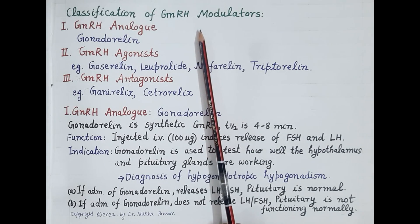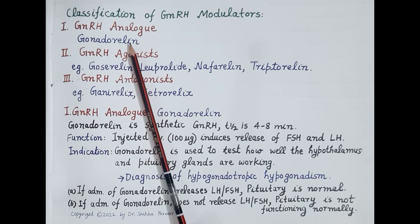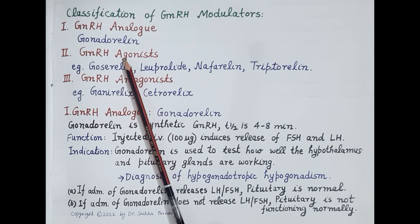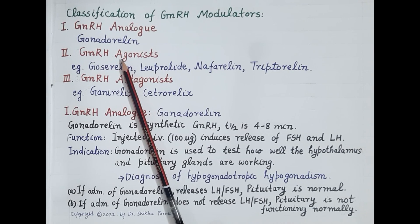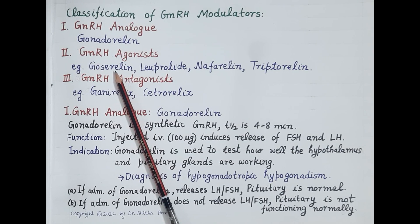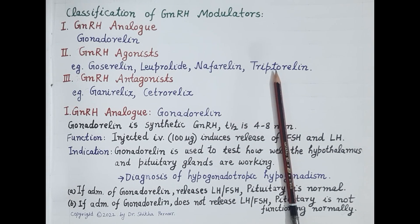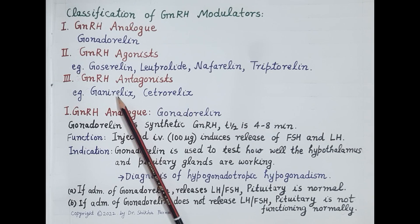GNRH modulators are classified into three categories. First is GNRH analog, which includes gonadorelin — a synthetic GNRH. Second is GNRH agonist, which binds to and stimulates GNRH receptors, either intermittently or continuously. Examples include goserelin, leuprolide, nafarelin, and triptorelin. Third is GNRH antagonist, for example ganirelix and cetrorelix.